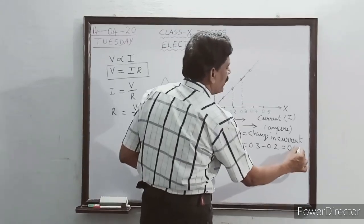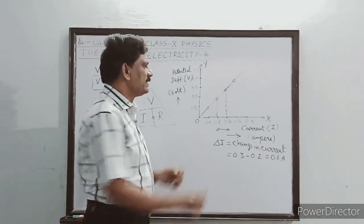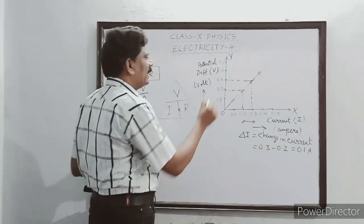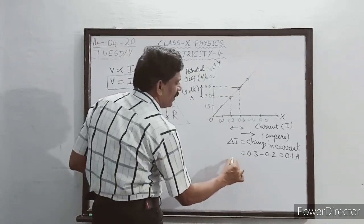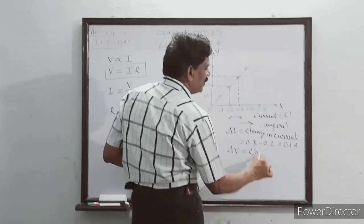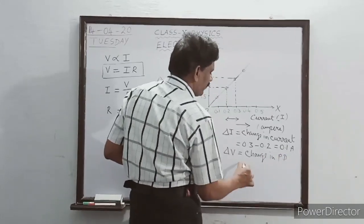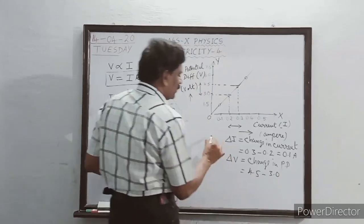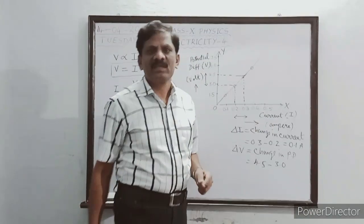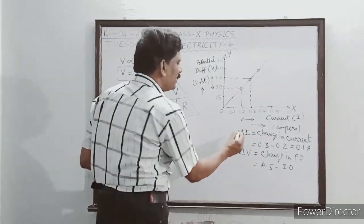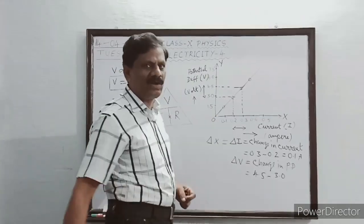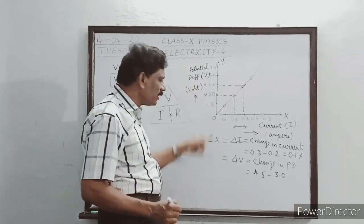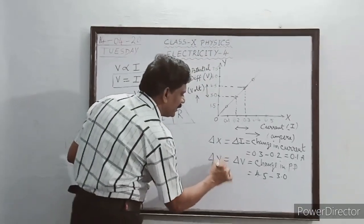The same two points projected on the y-axis give the y-intercept, denoted by ΔV, the change in potential difference. The change is 4.5 minus 3.0. The change in current is along the x-axis, so it can also be written as Δx. Similarly, the change in potential difference is along the y-axis, represented by Δy.